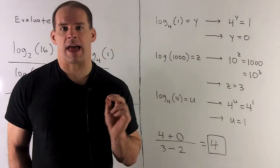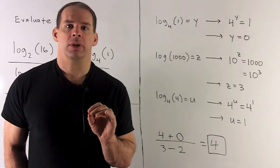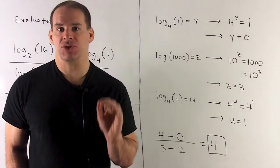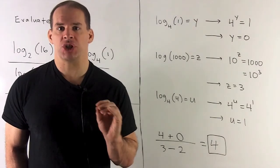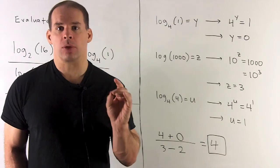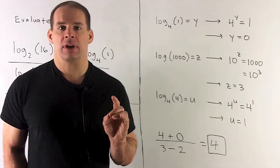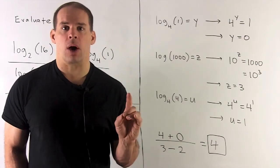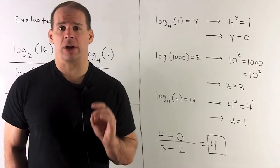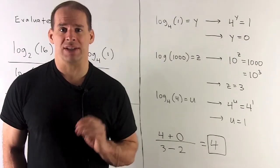Next, let's set log of the base 4 of 1 equal to y. Now, you might remember an identity that says, if I put 1 into logarithm for any base, 0 comes out. Let's just check by rewriting. So here, we'll have 4 to the y is equal to 1. The only way I can get a 1 come out is if I put 4 to the 0 power. If I take any positive number, the only way you're going to get a 1 is if you use exponent 0. So y is equal to 0.